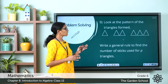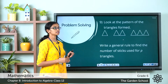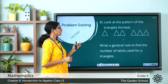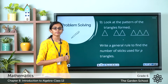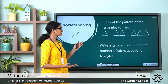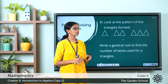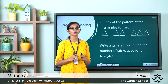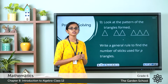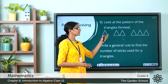The next question says: look at the pattern of the triangles formed and write a general rule to find the number of sticks used for P triangles. You have to observe the pattern and form an algebraic expression as the general rule. Look at the first triangle — to make one triangle, how many sticks do you need? You need 3 sticks.